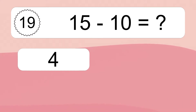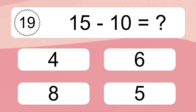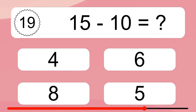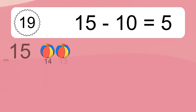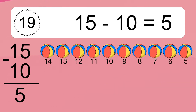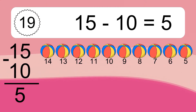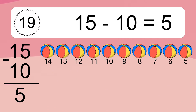15 minus 10 equals what? 15 minus 10 equals 5. Let's count it: 14, 13, 12, 11, 10, 9, 8, 7, 6, 5.